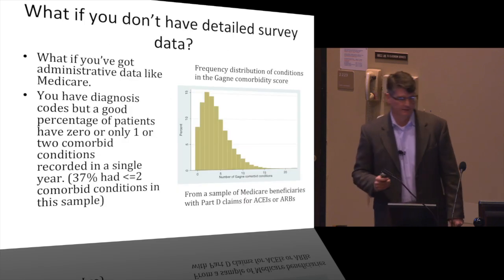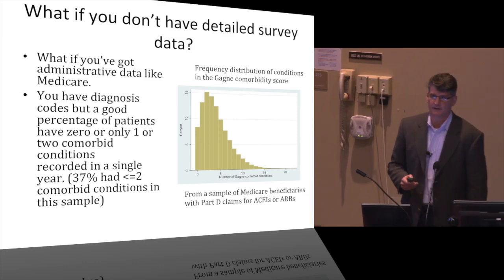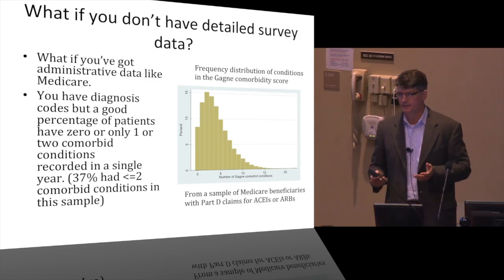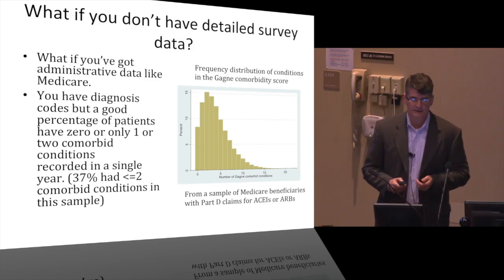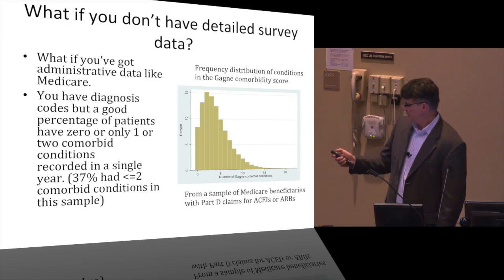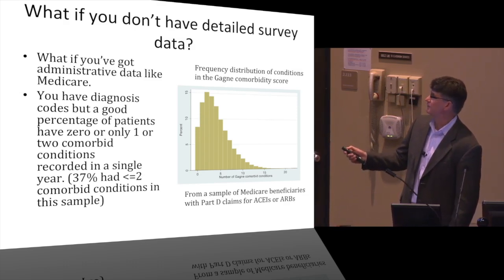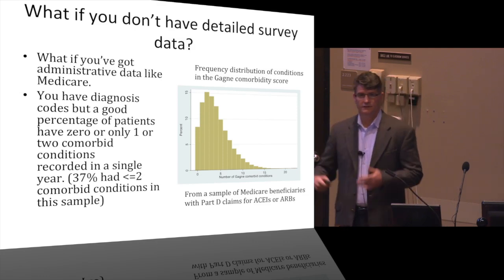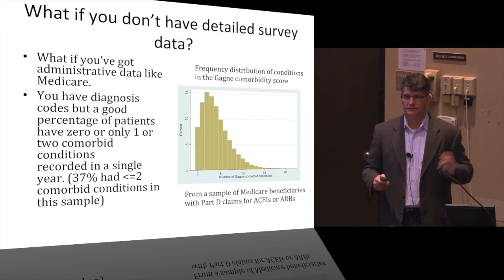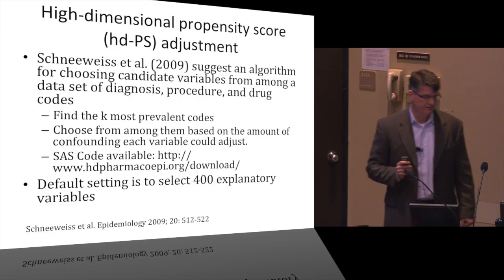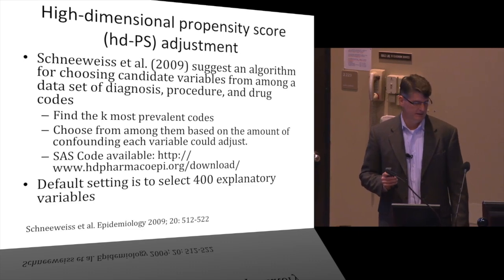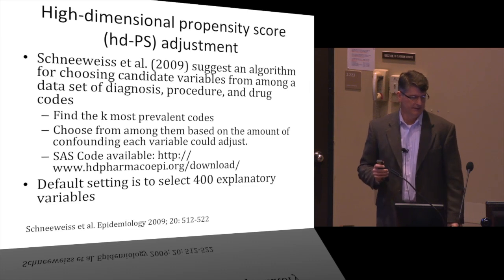But what if you only have Medicare diagnosis codes? If you're using something like the Charlson index, many patients have two or fewer comorbid conditions out of 23 variables, so you're entering a lot of zeros. Schneeweiss and colleagues developed a solution: the High Dimensional Propensity Score model. You download a SAS program, tell it where treatment, outcome, and codes are, and it finds the K most prevalent codes and selects up to 400 variables that adjust for the most confounding. You go away for lunch and come back with your propensity score model.